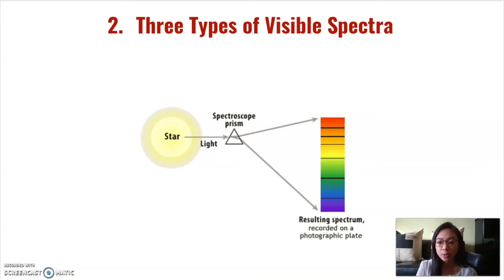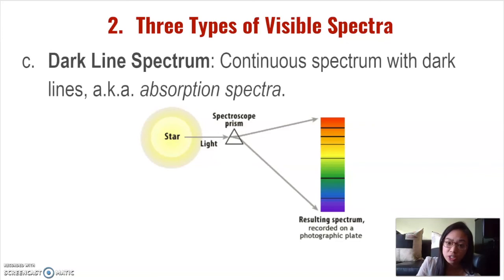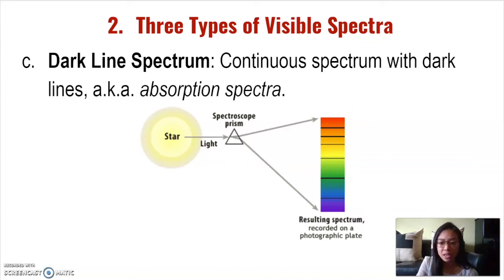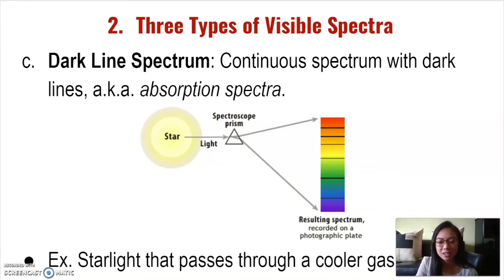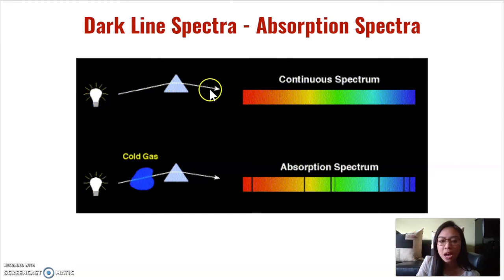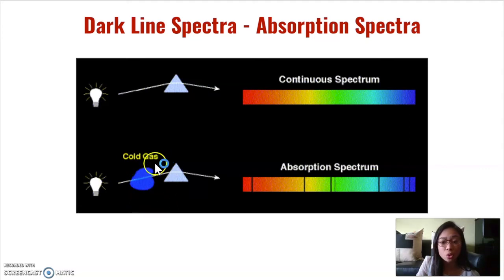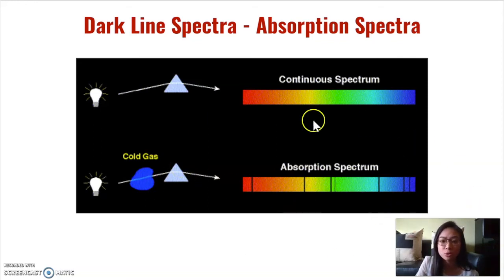Now we've addressed the continuous spectrum and the bright line spectrum. There's one more type: the dark line spectrum. This is when you have a continuous spectrum punctuated by dark lines where specific wavelengths have been absorbed — therefore these are also known as absorption spectra. An example of when you'd see a dark line spectrum is when starlight passes through a cooler gas. White light passing through a prism undisturbed gives us the continuous spectrum. When light passes through a cold gas, certain wavelengths are absorbed, showing us the composition of the gas and what elements are contained in it.